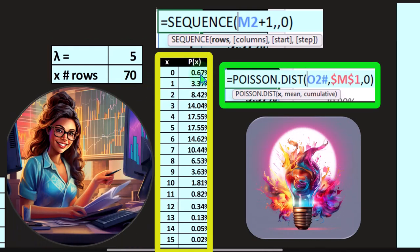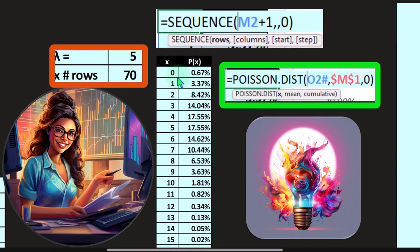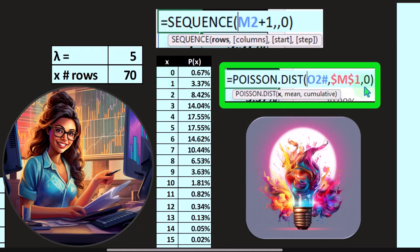The Poisson distribution for each cell is =POISSON.DIST. The x picks up zero, then one, and so on. If you use a spill array, you can pick all of them up at once. Then the mean — represented by lambda — is five. The last argument is whether we want it cumulative or not: are we adding up everything up to a point, or just the likelihood of each individual spot? Here we put zero (or FALSE) to get the likelihood of each individual value.